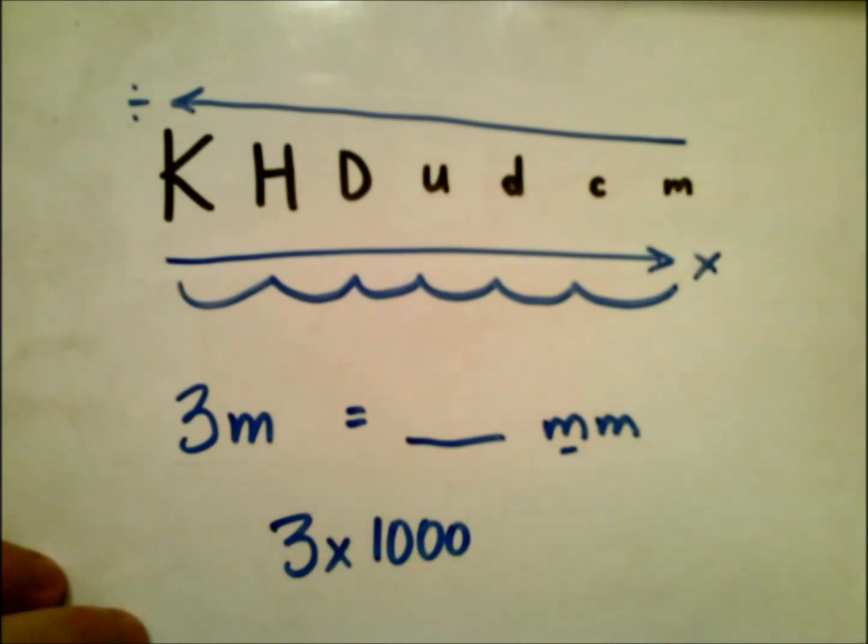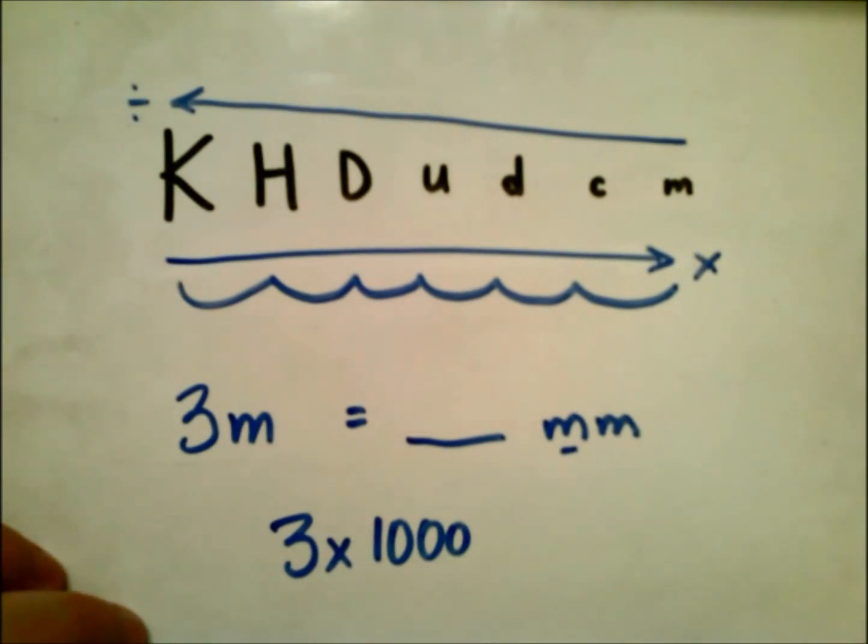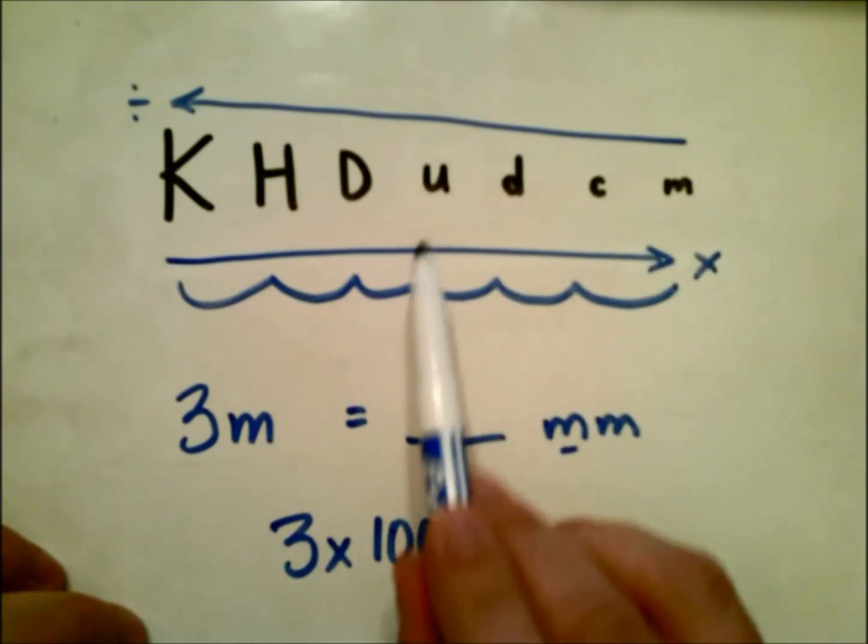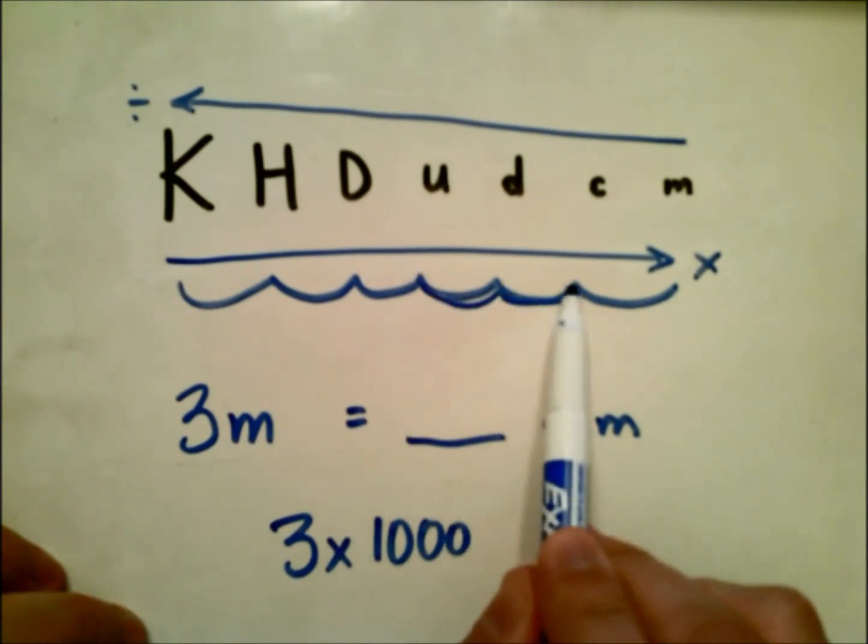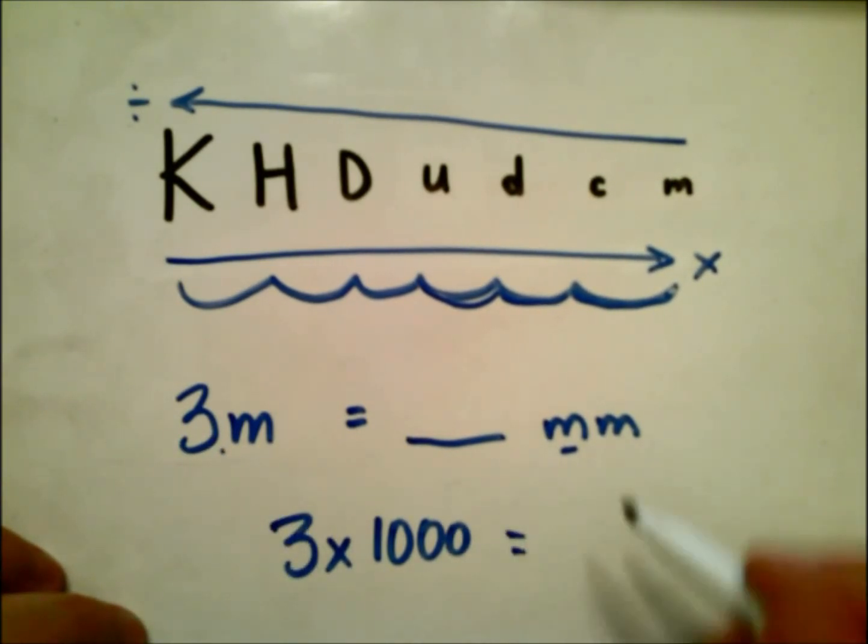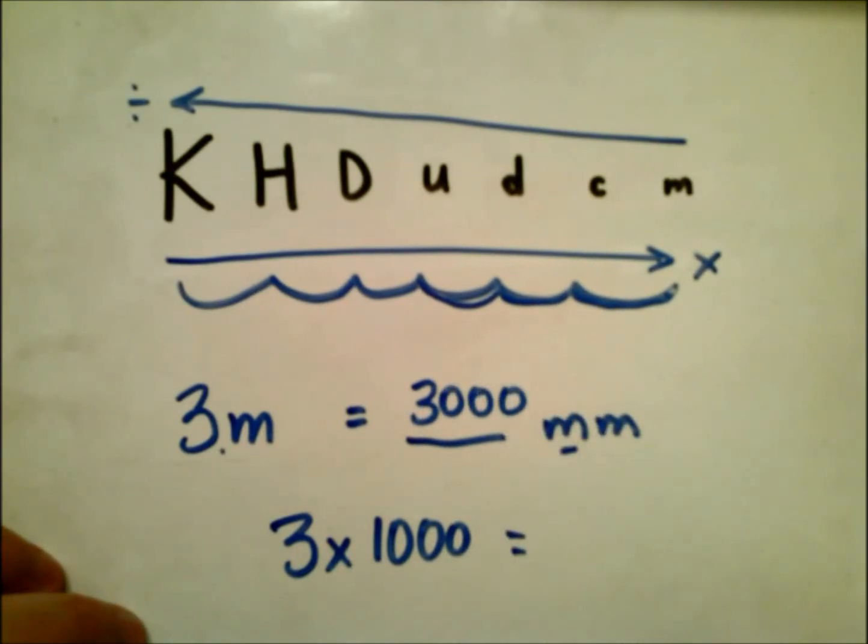But an even cooler, easier trick to do would be just see how many jumps it is from your base unit to millimeters, or the milli prefix. So we're here once, twice, three times. So what we can really do is we can put a decimal where it originally is in three, make three jumps, and then we're at 3000 millimeters.